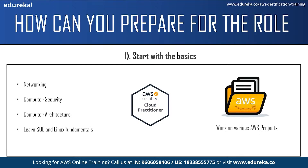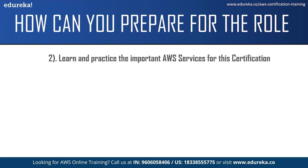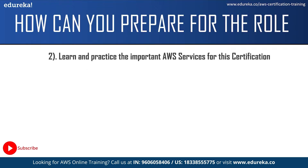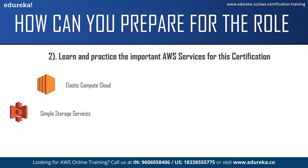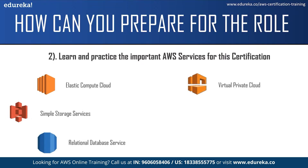The next step would be working on AWS projects. You can work on projects across different services — start with easier projects initially and then move on to more difficult ones. You can find good projects on the Amazon Web Services official website. The next step is learning and practicing the important AWS services for the certification. Some of the important services are Elastic Compute Cloud, Simple Storage Service, Relational Database Service, Virtual Private Cloud, Amazon Kinesis, and Amazon Lambda.